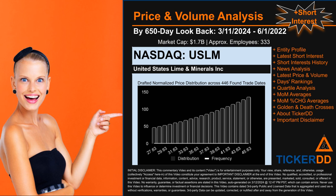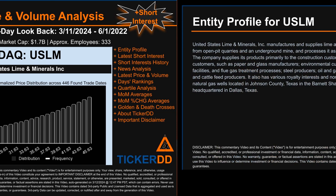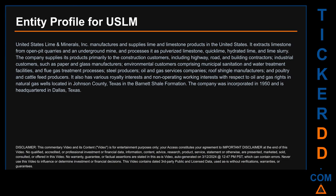Remember that this is just a drafted, in-progress observational model to best fit abstracted third-party data into various opinionated views. Hello, my name is Carl. I searched the public web to find information about the company behind this ticker. United States Lime and Minerals Inc. manufactures and supplies lime and limestone products in the United States. It extracts limestone from open-pit quarries and an underground mine, and processes it as pulverized limestone, quicklime, hydrated lime, and lime slurry.